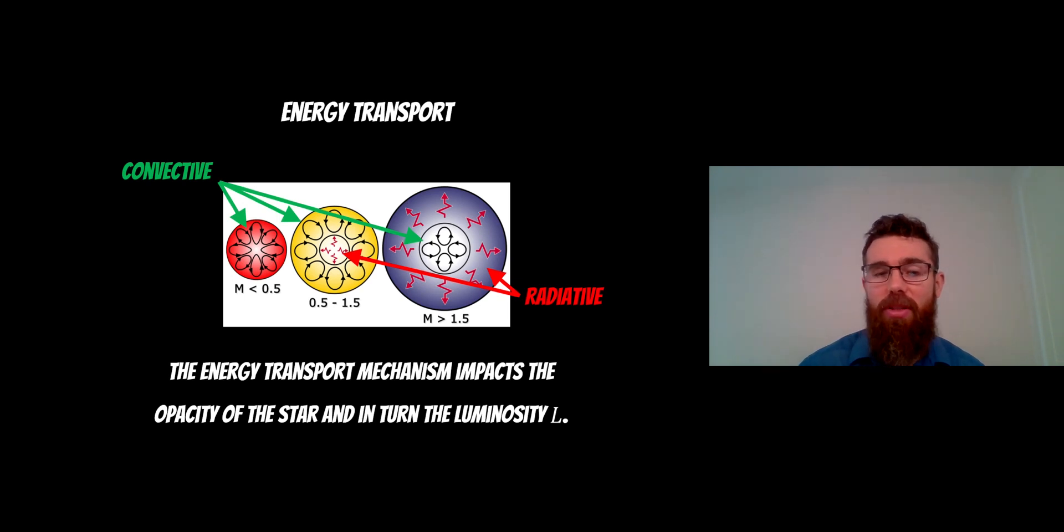Now as the star increases, the energy transport mechanism changes. So for low mass stars, like red dwarfs, they are typically fully convective. So the way they transport energy is through convection. For solar mass stars in the middle here, they have a radiative core.